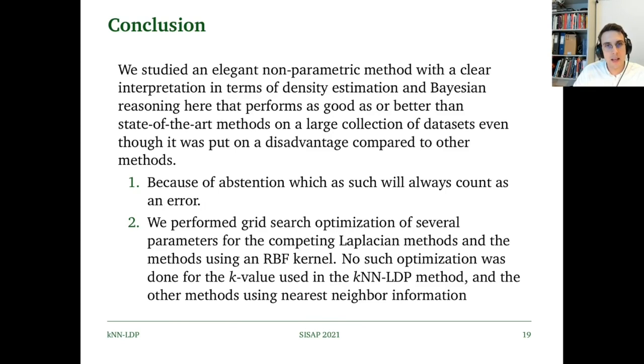First, because of abstention, which as such will always count as an error. And secondly, we performed grid search optimization of several parameters for the competing Laplacian methods and the methods using an RBF kernel, but no such optimization was done for the K value in the KNN-LDP method and other methods using nearest neighbor information.